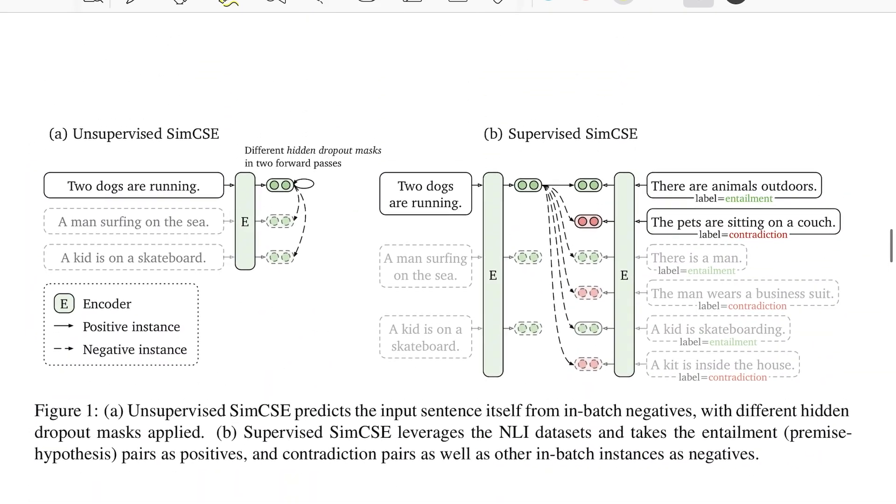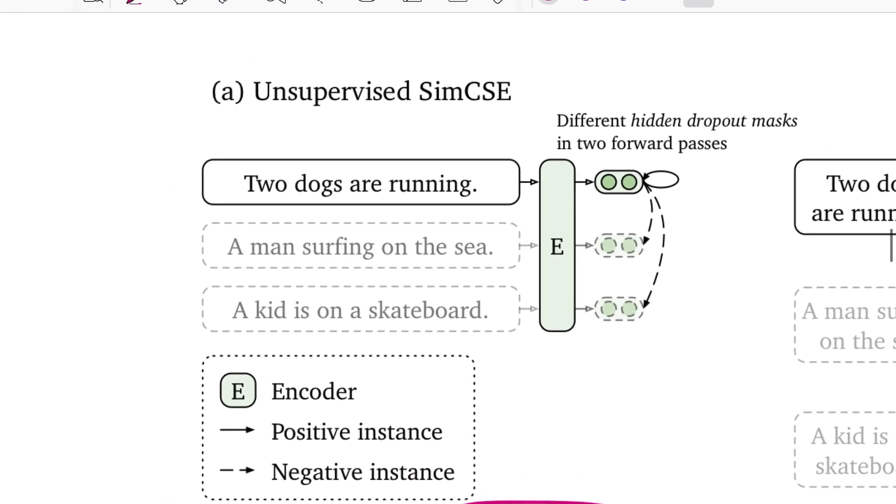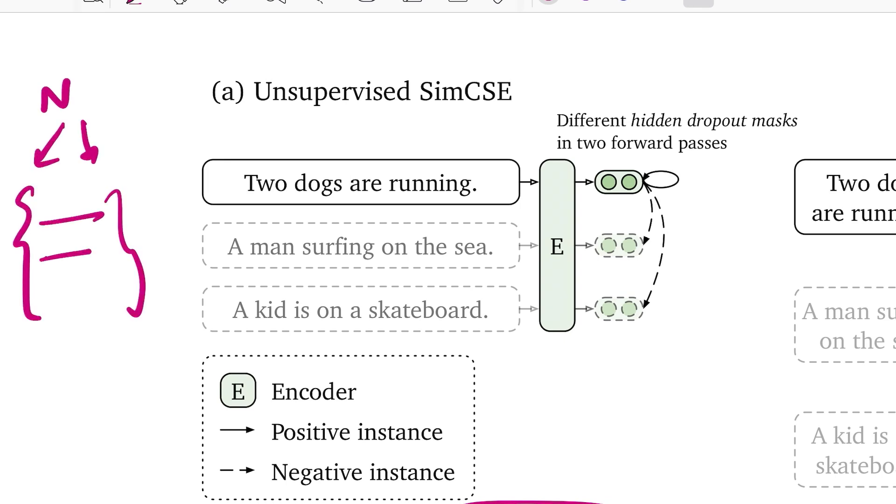As a part of this paper, they proposed both unsupervised and supervised way for training your sentence embeddings model. For the purpose of this video, we'll just stick to unsupervised technique. This is how the flow of it looks like. The underlying idea that they propose is very simple, which is that let's say you have N number of sentences of which you form multiple batches and let's say one of the batch has three sentences and these are those three sentences.